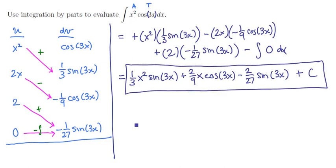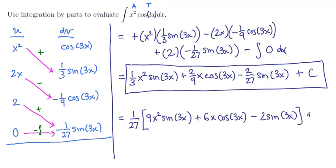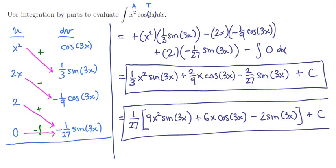It's worth pointing out that, like in the other examples, we could pull out the biggest denominator, a 1/27, and be left with 9x squared times the sine of 3x, plus 2 times 3, or 6x times the cosine of 3x, negative 2 sine of 3x. This expression times the constant, and that's a slightly simpler version of it. And either one of them is acceptable for us.